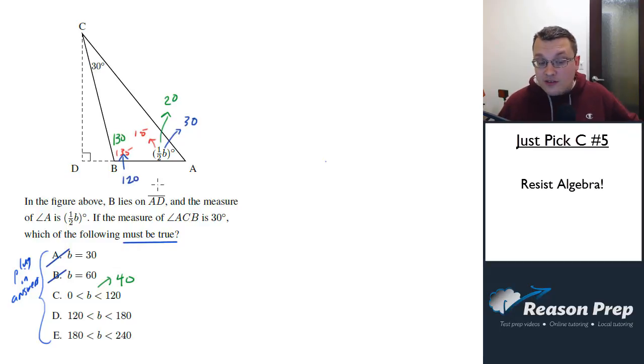Again that seems plausible. And notice this is saying that B could be anything between zero and 120, which means that one half B would have to be between zero and 60, and that seems pretty plausible. So let's hold off on C for a bit.